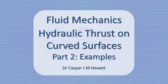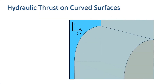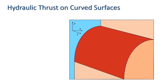In this video, we are going to look at some examples of how to calculate the hydraulic thrust on curved surfaces. In part 1 of this video, we considered a curved surface which is part of a wall submerged in a fluid. We examined the thrust on the curved part of the wall — the red area highlighted here. Because we are only going to use this method for cases where the shape is uniform in the z direction, we performed our analysis in the xy plane.